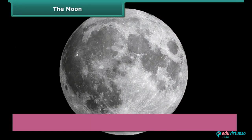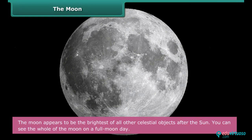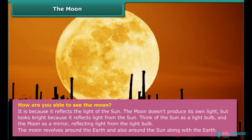The Moon appears to be the brightest of all other celestial objects after the Sun. You can see the whole of the Moon on a full Moon day. How are you able to see the Moon? It is because it reflects the light of the Sun. The Moon does not produce its own light but looks bright because it reflects the light from the Sun. Think of the Sun as a light bulb and the Moon as a mirror reflecting light from the light bulb.